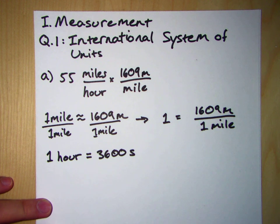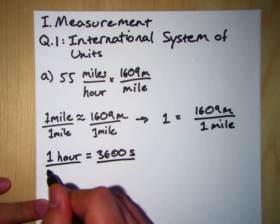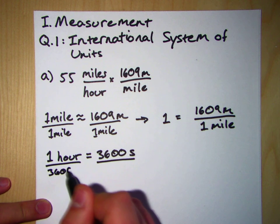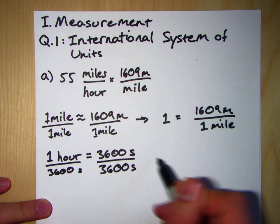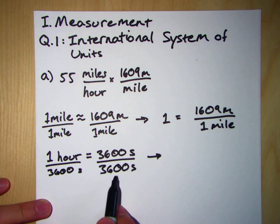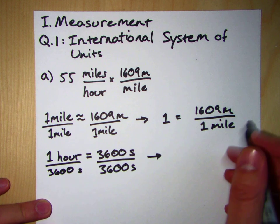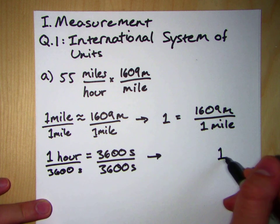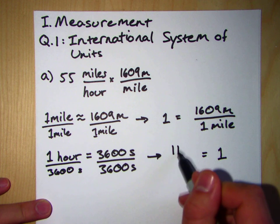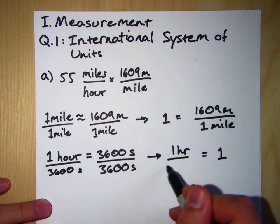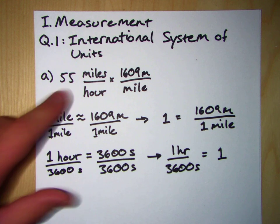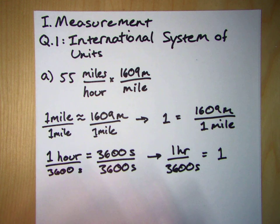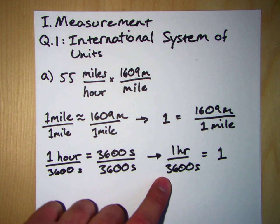So in this case, if we divide by, because the hours is on the bottom, we're going to divide by 3600 seconds on both sides. And what we see is that one is equal to one hour divided by 3600 seconds. So now we're going to take this quantity up here and we're going to multiply it by one again. But not just any one, we're going to multiply it by this one in particular.